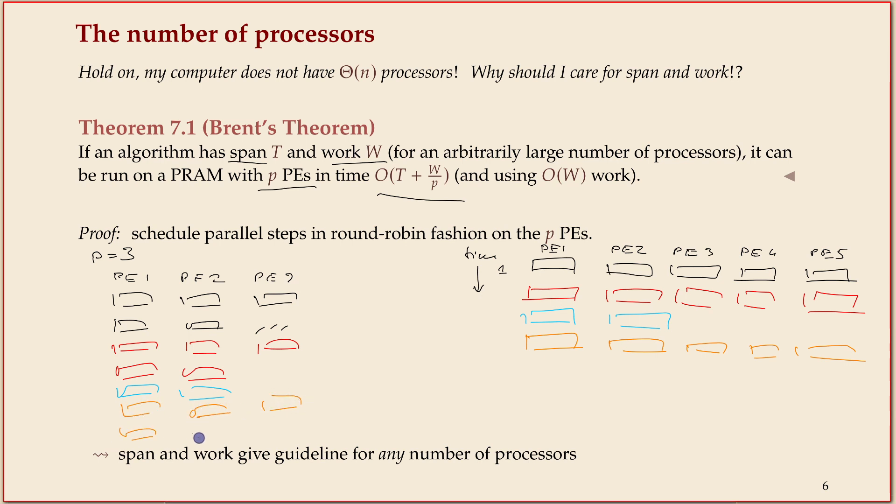Again, I'm leaving processing element three doing nothing at the end of it. For the blue time step we actually get by with the same time—it fits on the machines. I guess you can see what the thing will look like here now. So why is that good enough?